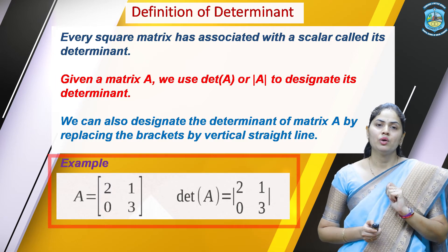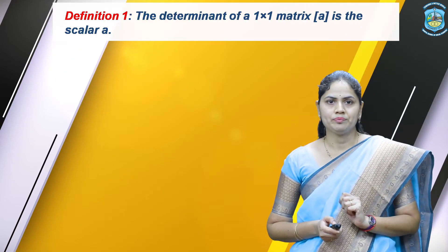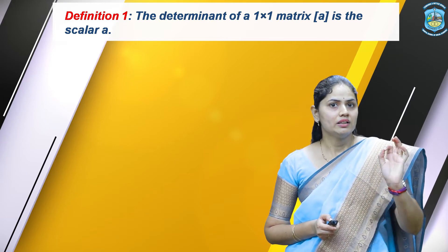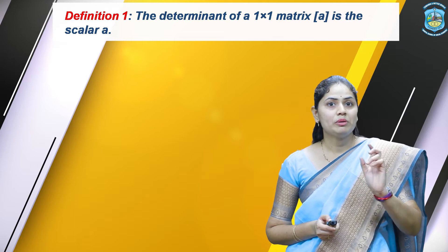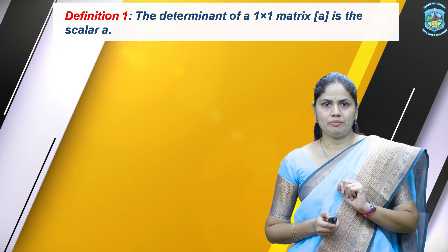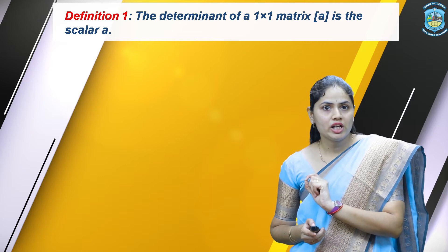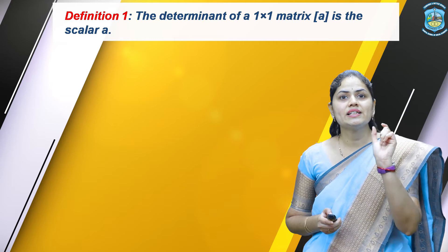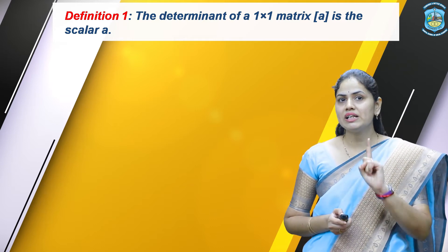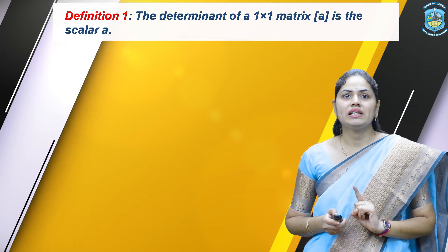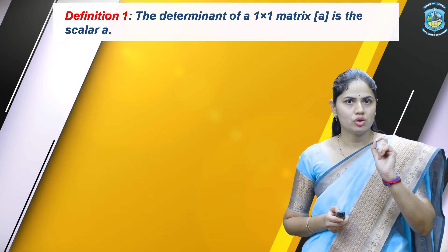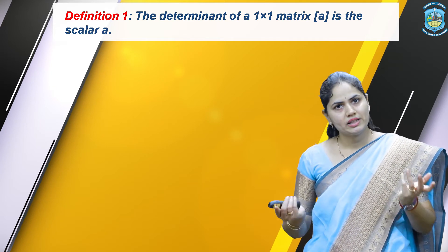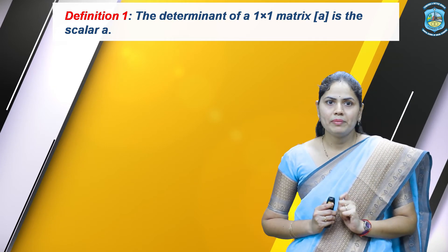Let us start with the first definition of determinant: the determinant of a 1 by 1 matrix. The order of the matrix is 1 by 1 — 1 row, 1 column. A of i,j is the scalar A. This matrix has a single element, and that single element is called the scalar. So in a matrix of order 1 by 1, the single element is the scalar of that matrix.